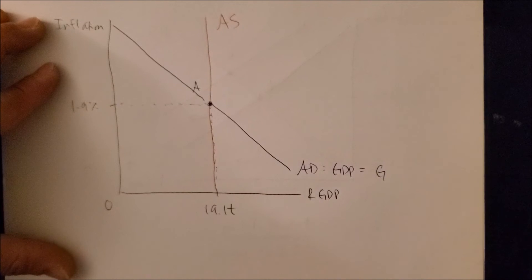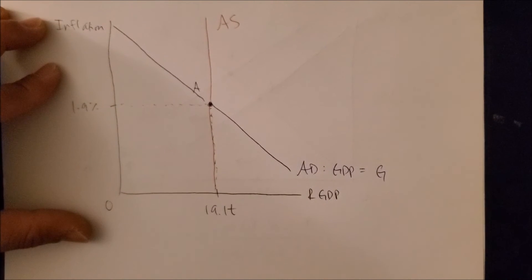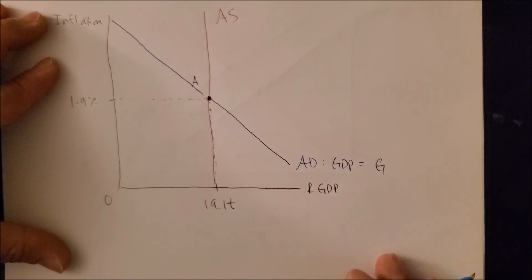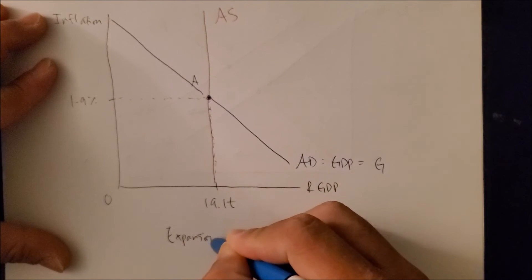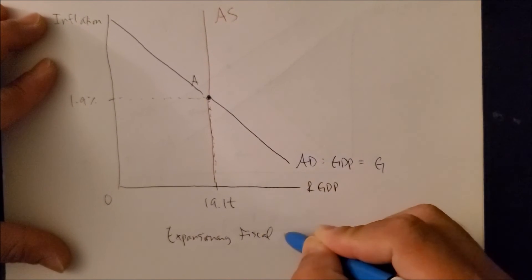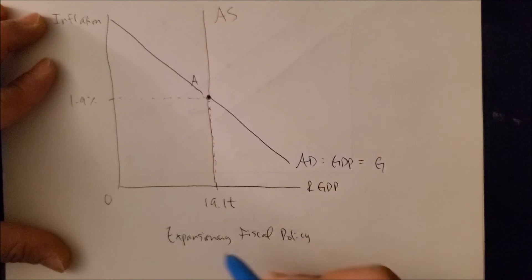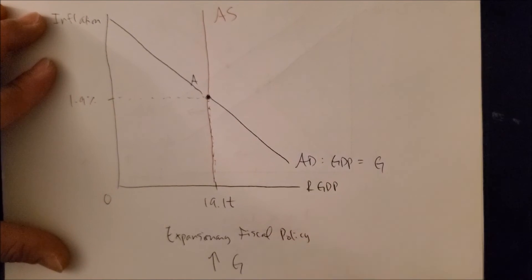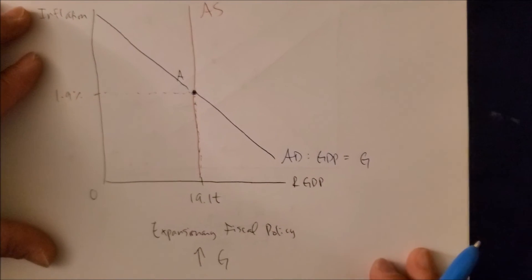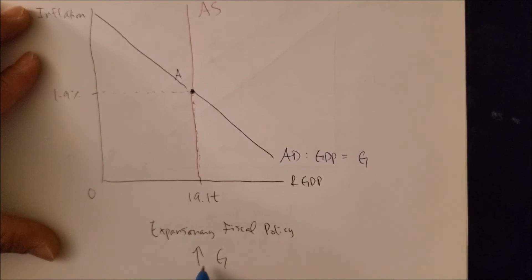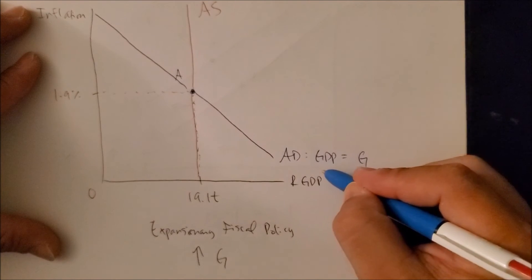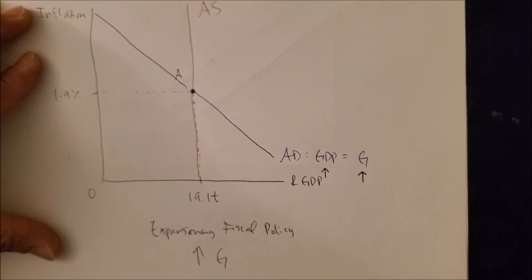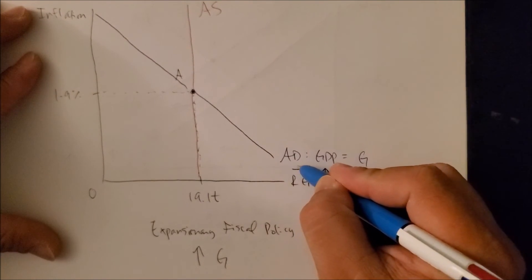So in the previous example of the Keynesian school, we looked at what happens when there is an expansionary fiscal policy, and this is where we see more government spending, higher G. Well, let's see what happens. Increase in G leads to an increase in G on this side. GDP increases, AD will shift to the right.